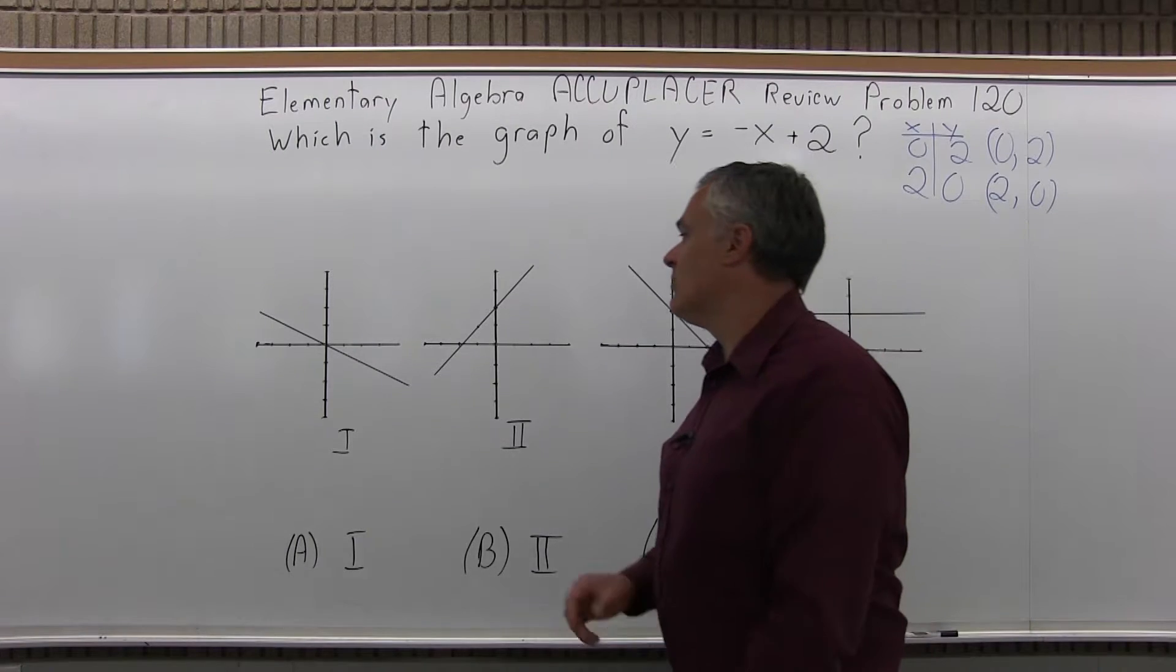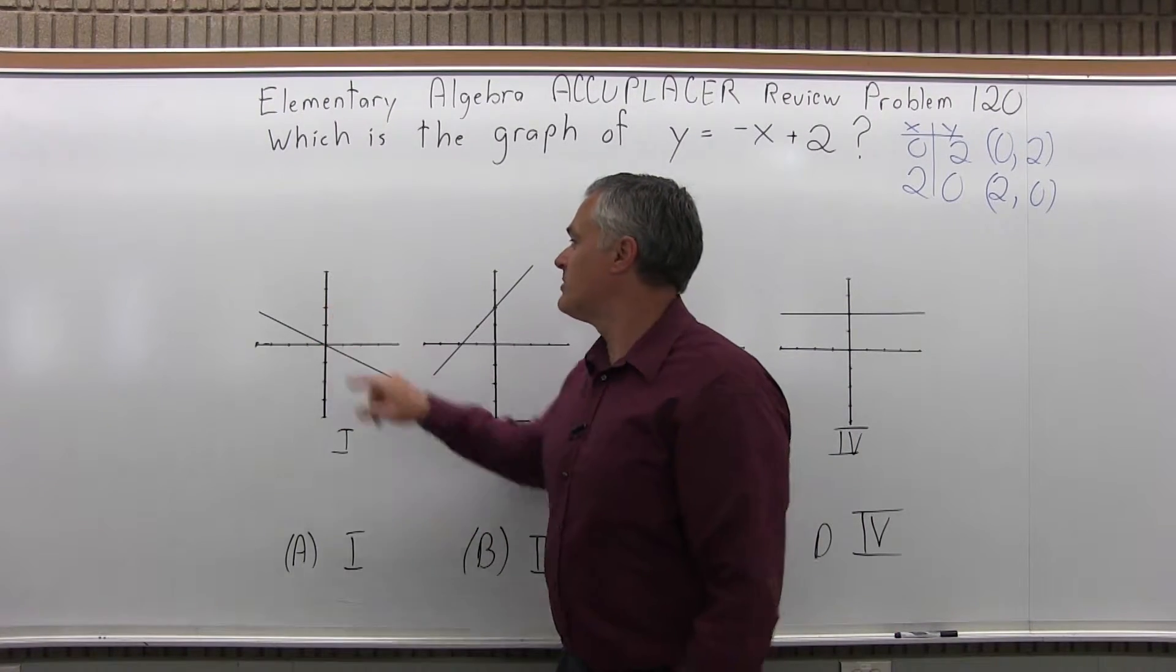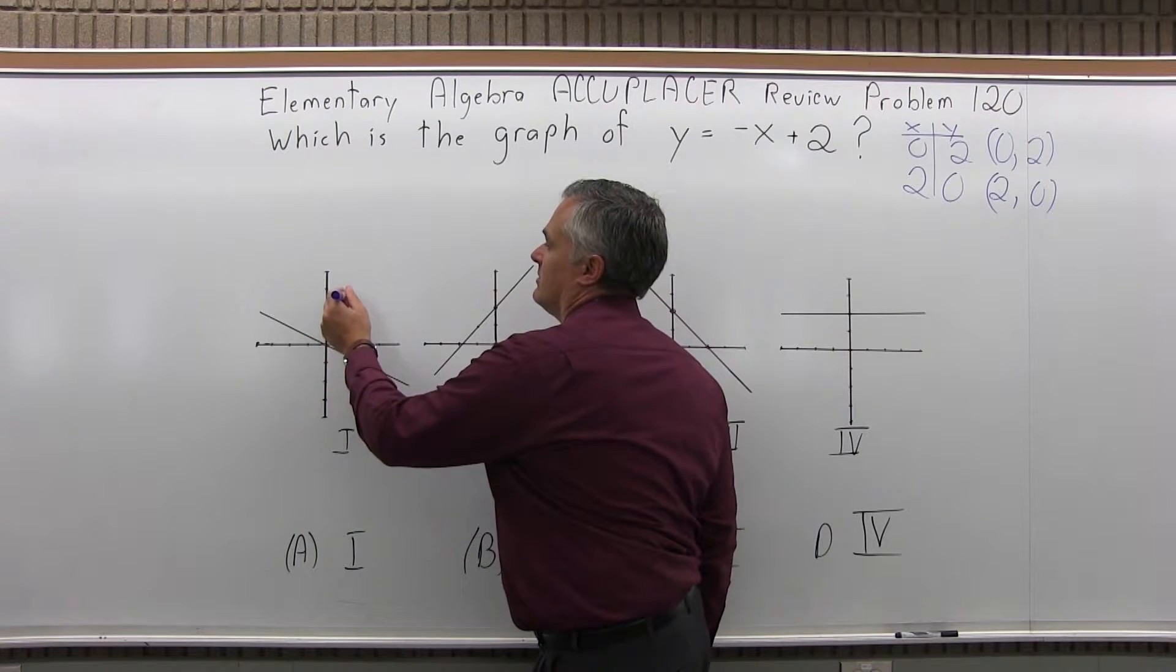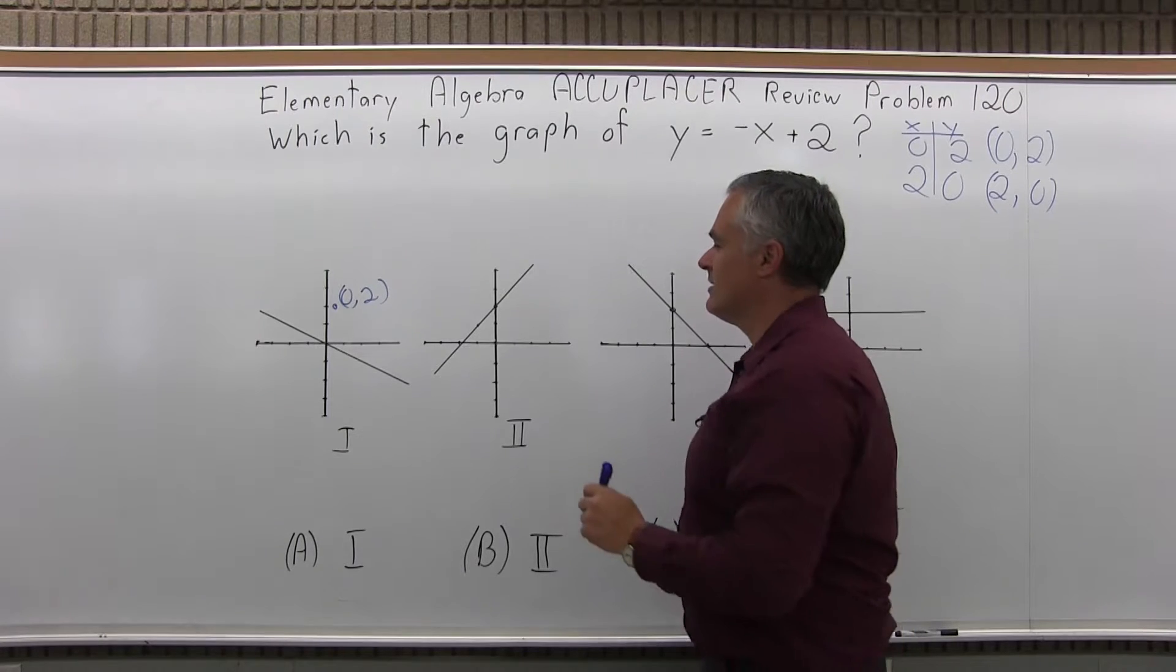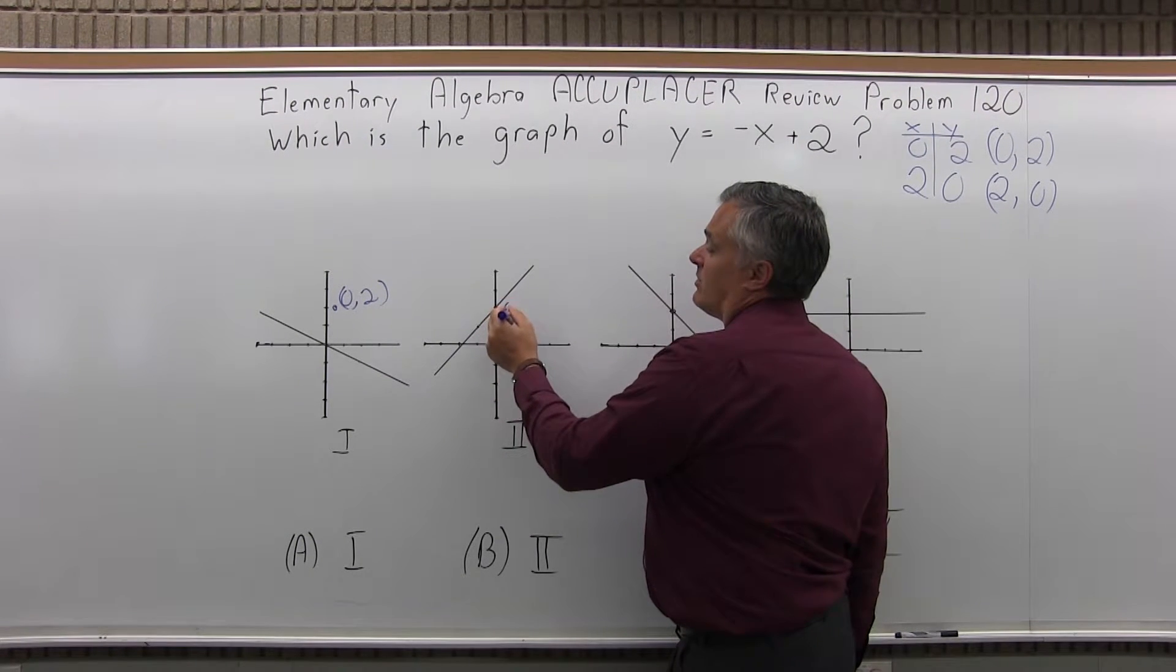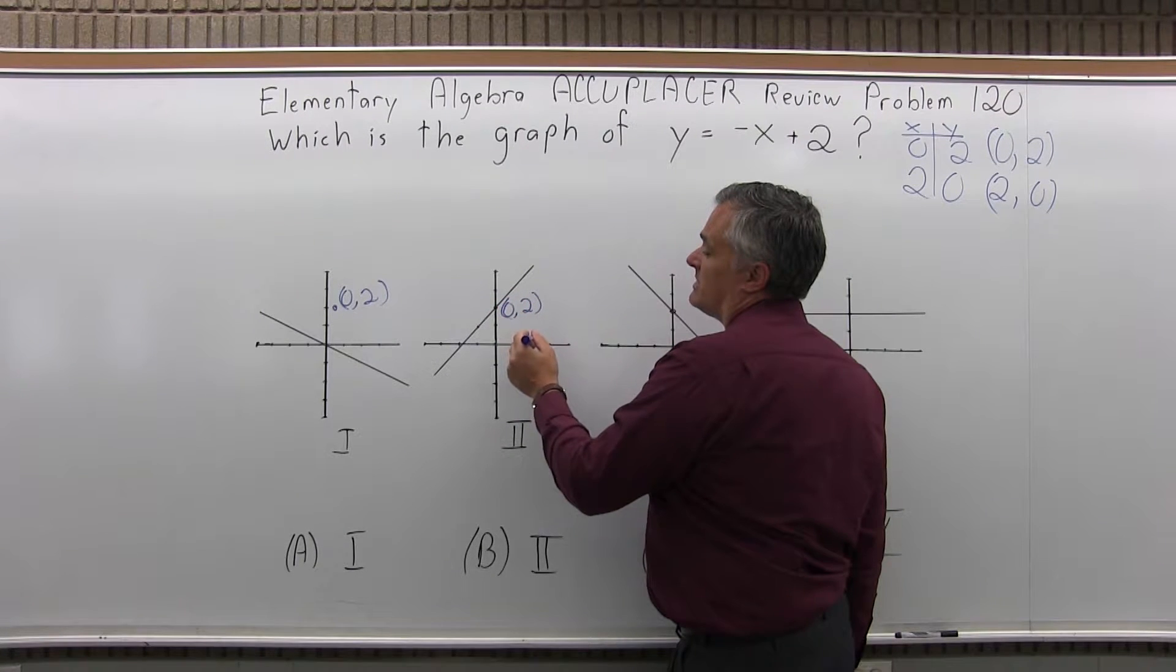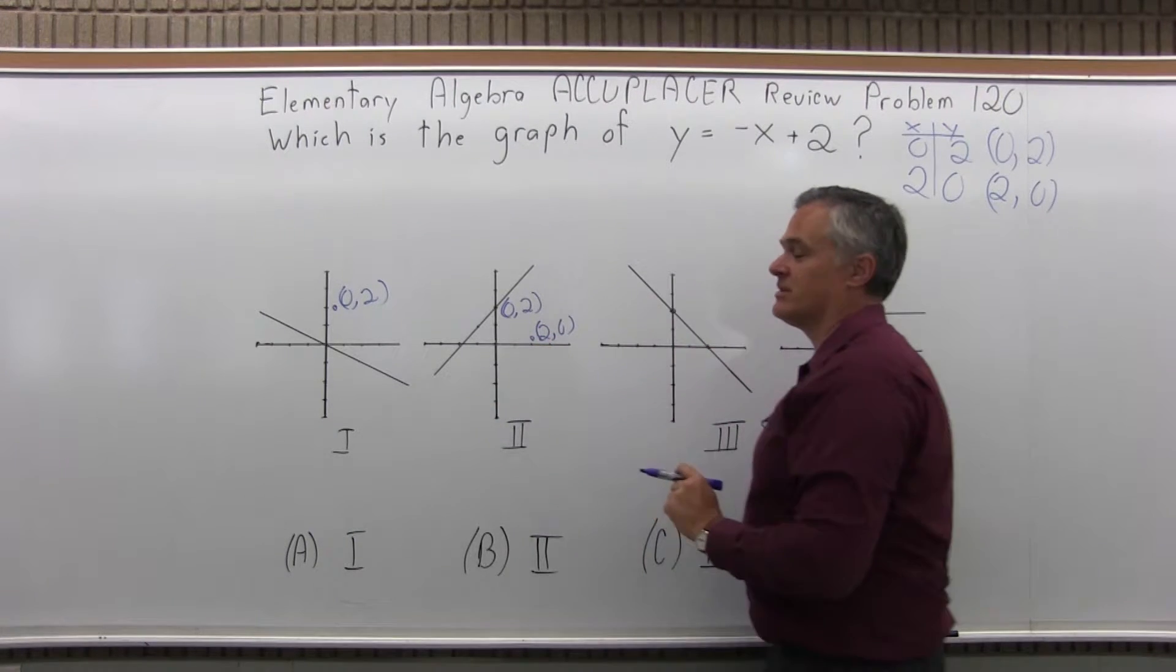So if I look at my possible graphs, (0,2) - over 0, up 2. Over 0, up 2 is there. It can't be option 1, it doesn't go through that point. Option 2 is over 0, up 2. Well, that works. Over 0, up 2 works. But then over 2, up 0, that doesn't work. So actually, it cannot be option 2.